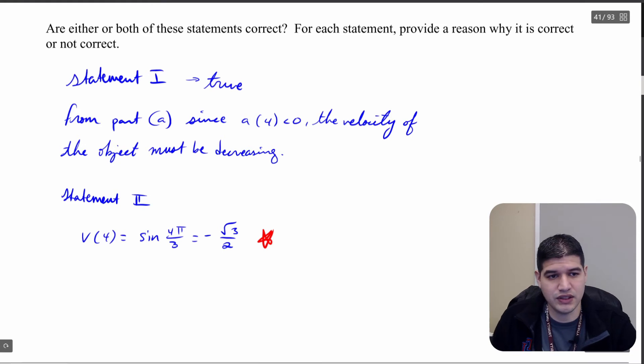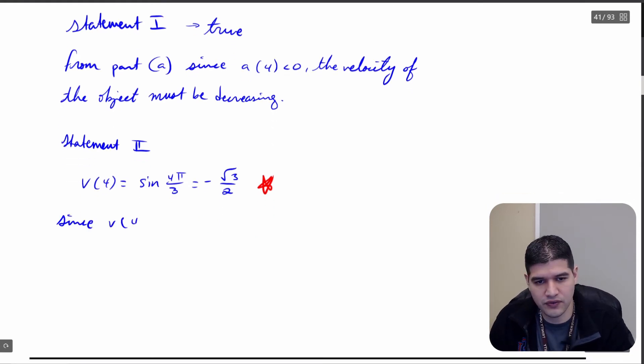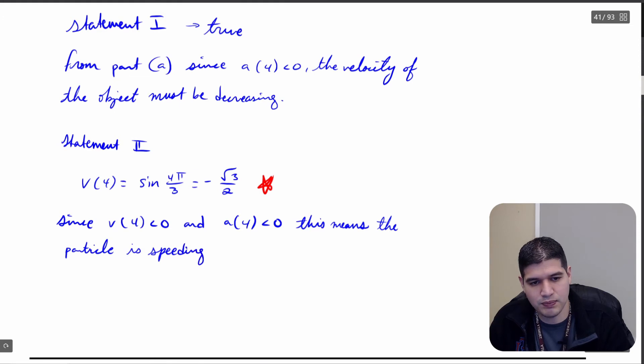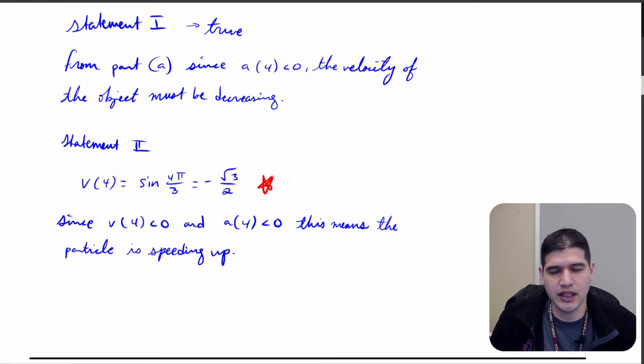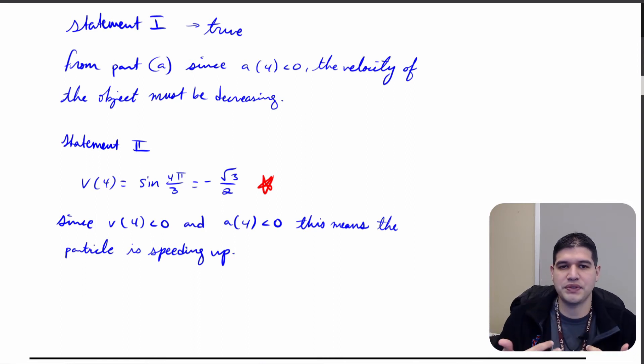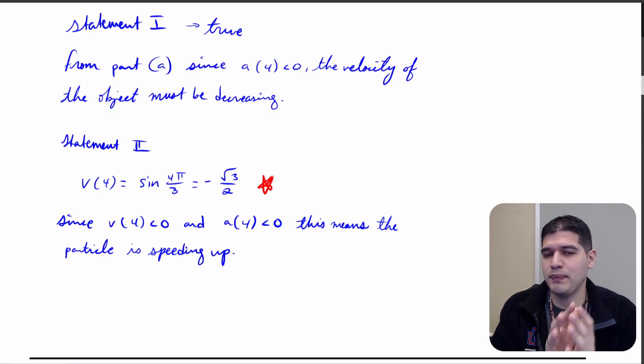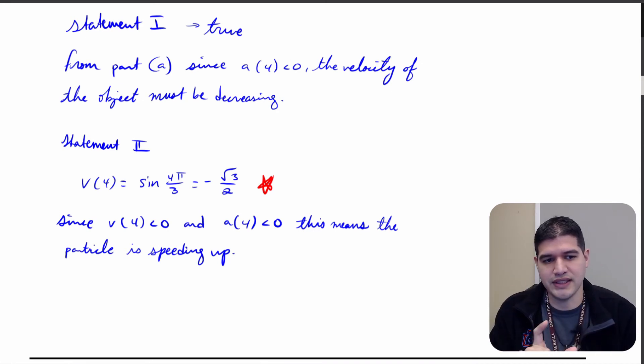So since both of those are negative, so let me write that down here. Since v of 4 is less than 0 and a of 4 is less than 0, since both of those are the same sign, this means the particle, the object, whatever it is, is speeding up, or you could say potentially here that the speed is increasing. I like to say speeding up, slowing down, that's a little bit more obvious in terms of how we speak English, but you do want to specify that they are the same sign. And since they are the same sign, we know that the speed is increasing. Now, it doesn't matter if they're both negative, right? They're getting more and more negative, which means that the speed is increasing. We're not worried about the sign, we're worried about whether the signs are the same or opposites, and that's what tells us here.